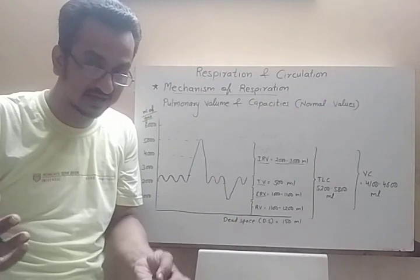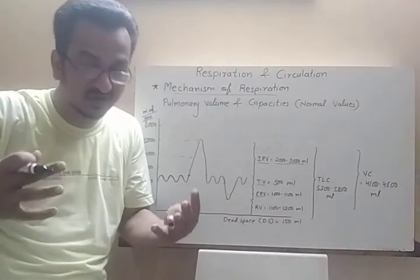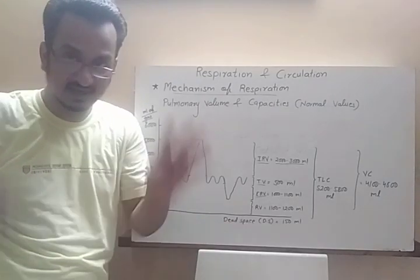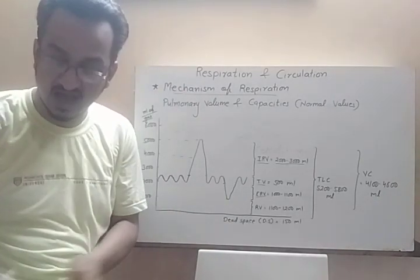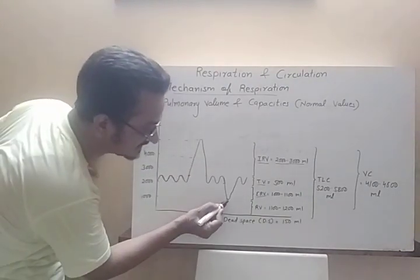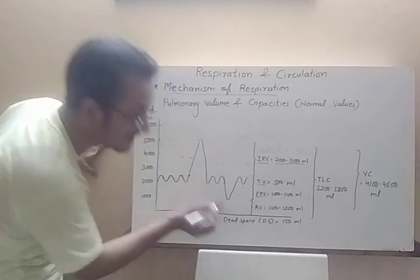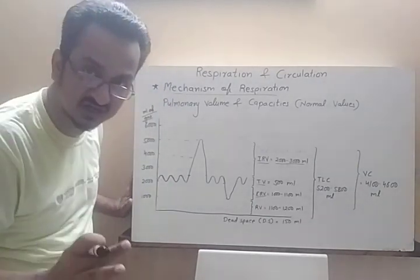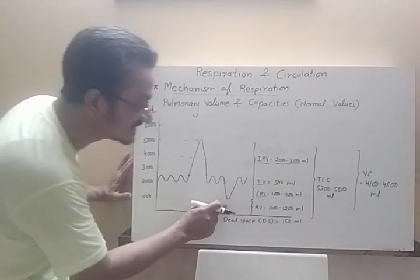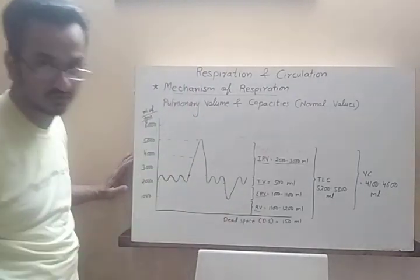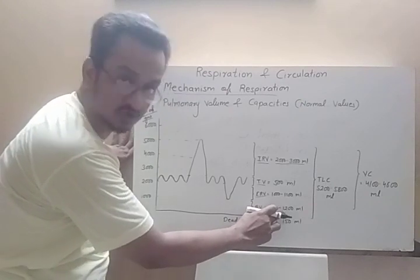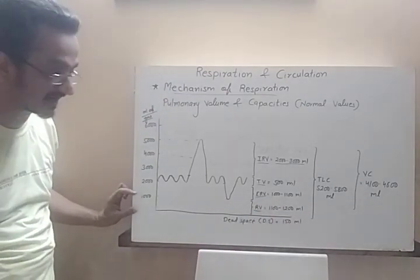No matter how forcefully we try to empty our lungs, they can never be completely emptied. Some air always remains inside. Even after maximum forceful expiration, a certain amount of gas stays in the lungs and cannot be expelled. This is called residual volume. Residual volume is normally 1100 to 1200 ml.